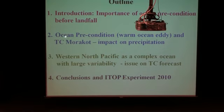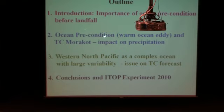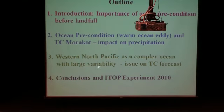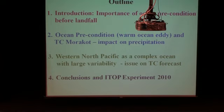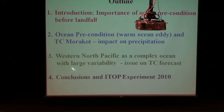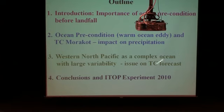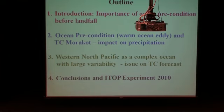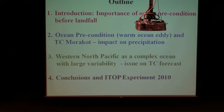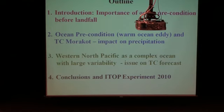The second part will be how all these ocean preconditions, in particular warm ocean eddies, interact with Typhoon Morakot and their possible impact on precipitation. The third part is to share with you how we observe from satellite observations and some in-situ ocean measurements to see Western North Pacific is a complex ocean with large variability, so we will share a little bit more on the issue of TC forecast. Lastly, we will give conclusions and share a little bit more on the ITOP experiments, which is a large field experiment this summer between US ONR and Taiwan National Science Council.